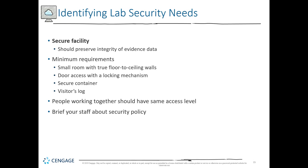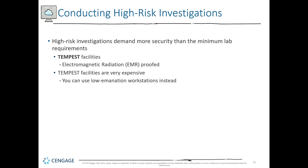Now that we have an understanding of the secure facility, the requirements, the hardware, and software — how do we conduct the investigation? When we have a high-risk investigation, this normally demands more than the minimal requirements of a lab. There are what are called Tempest facilities, which provide a certain level of electromagnetic radiation-proofed rooms. These rooms are expensive and you can use low-emanation workstations instead, but this is an additional cost you're normally not going to need unless dealing with certain types of investigations.